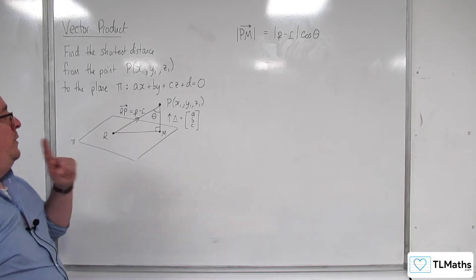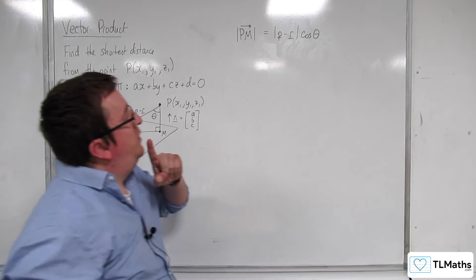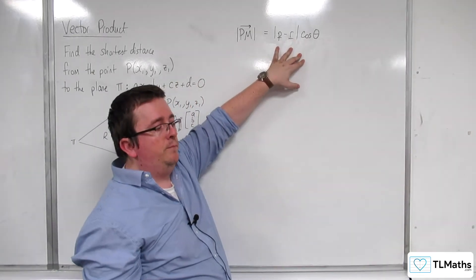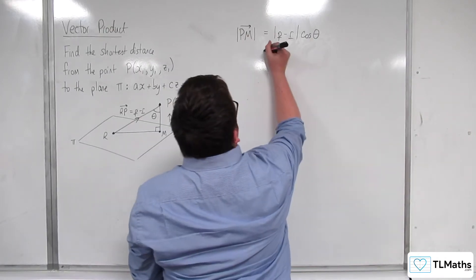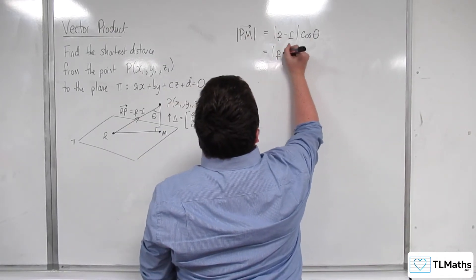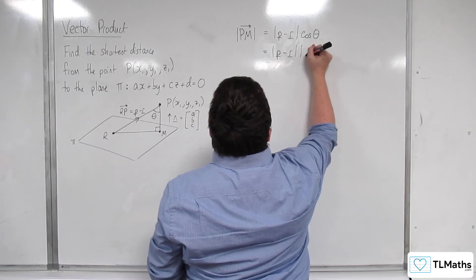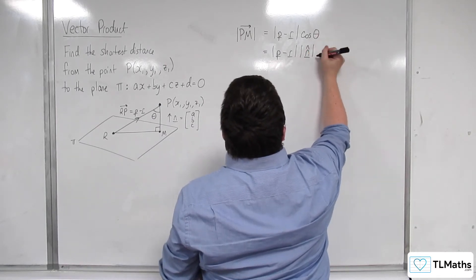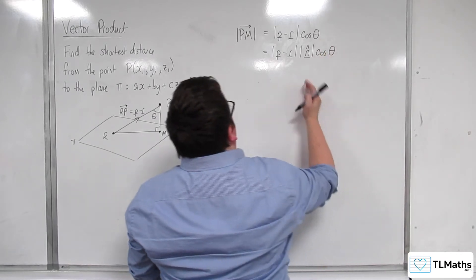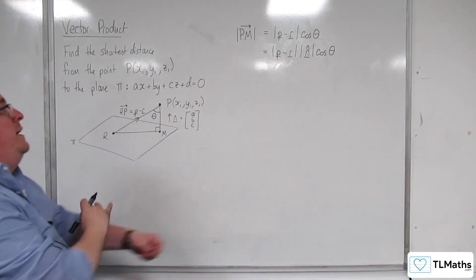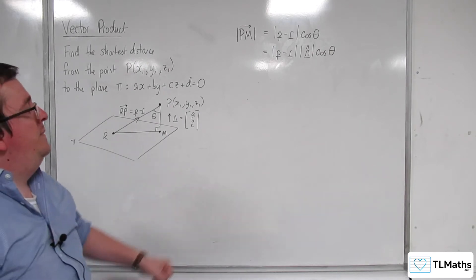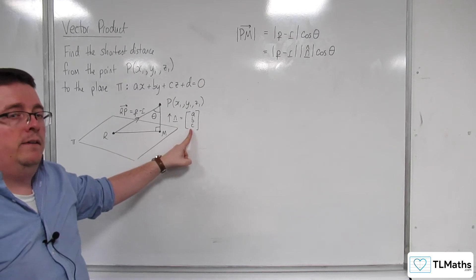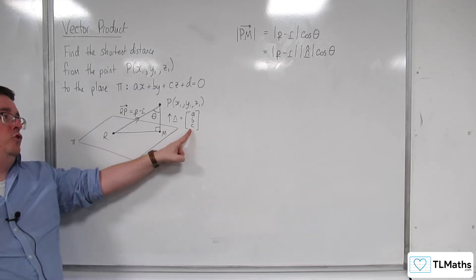Right, so then what I'm going to do is say, well, this won't change if I multiply it by 1. So I'm going to introduce here multiplying by 1, multiplying by the unit normal vector times cosine of theta. That won't change the magnitude of that right-hand side, because I'm just multiplying by 1. N hat here is a unit vector in the direction of N, the normal vector to the plane.